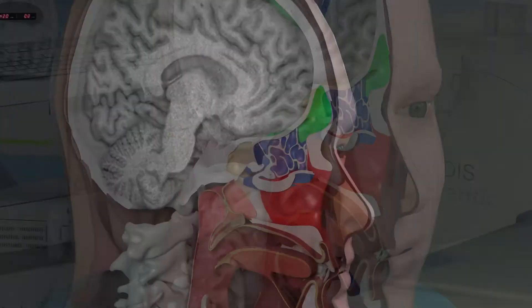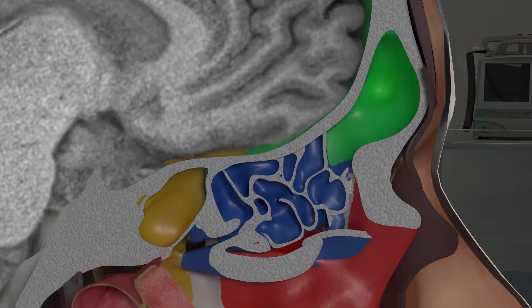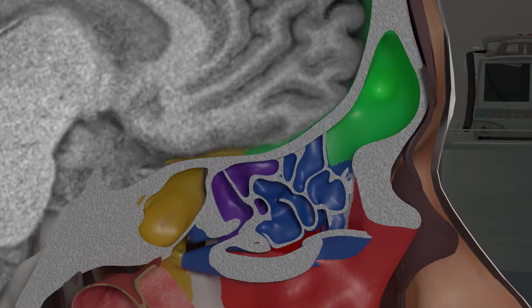When viewed in the sagittal plane, you can see how the ethmoid sinuses occupy the upper parts of the nasal cavity from front to back. The sphenoid is seen in yellow and is behind the nasal passage. The ethmoid sinuses, shown in blue, are further divided into the anterior ethmoid sinuses and the posterior ethmoid sinuses, shown in purple. These two subdivisions have distinct drainage pathways.